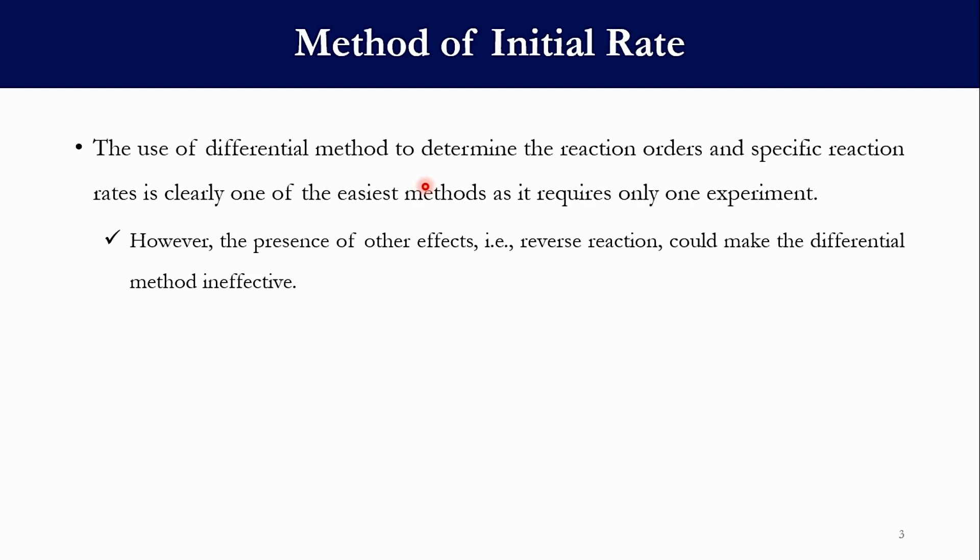So talking about the method of initial rate and why this method has to be used. First we start with the differential method. The use of differential method to determine the reaction order and the specific reaction rate constant can be set as clearly the winner because it requires only one experiment. But the presence of other effects such as reversible reaction could make the differential method ineffective. This method can be set as the replacement of the differential method.